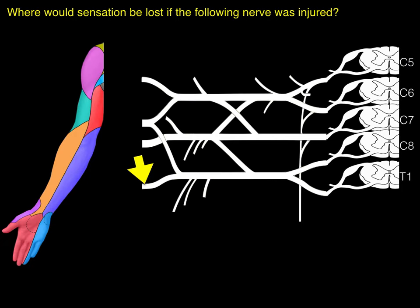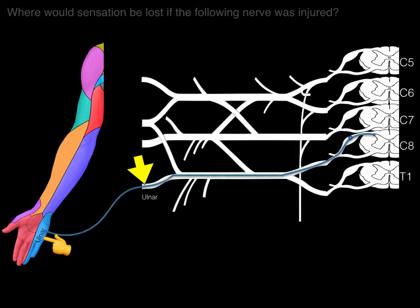Where would sensation be lost if the following nerve was injured, shown by the yellow arrow? Sensation would be lost in the ulnar nerve distribution only — other peripheral nerves would be unaffected. If you injure a peripheral nerve, you lose sensation in its associated cutaneous field. Now identify the letters for a lesion in the following location. The C8 and T1 roots make up the lower trunk. Knock out the lower trunk and you affect both the C8 and T1 dermatomes — the ulnar nerve and medial cutaneous nerve of the forearm and arm are all going to be affected. This is what happens in Klumpke's palsy.